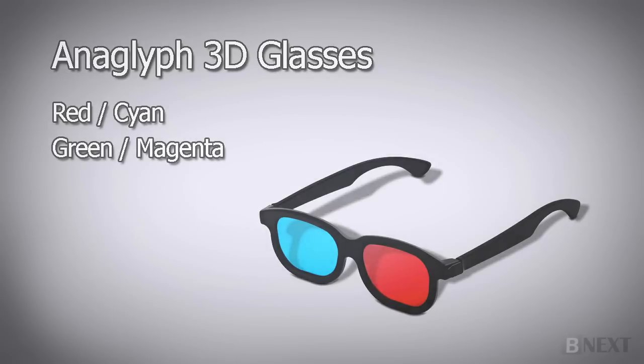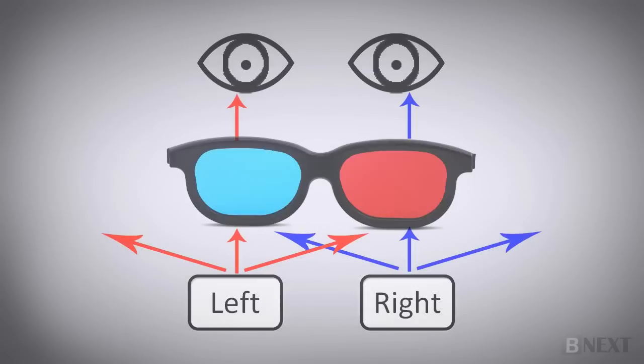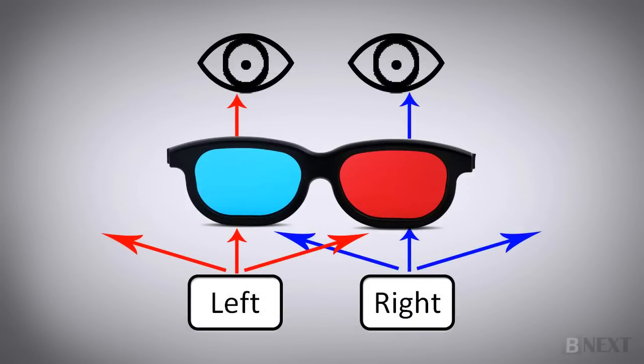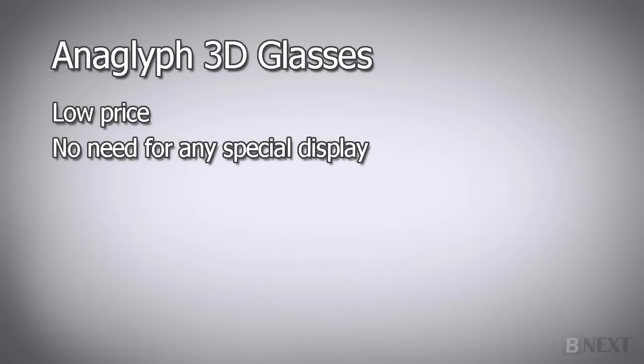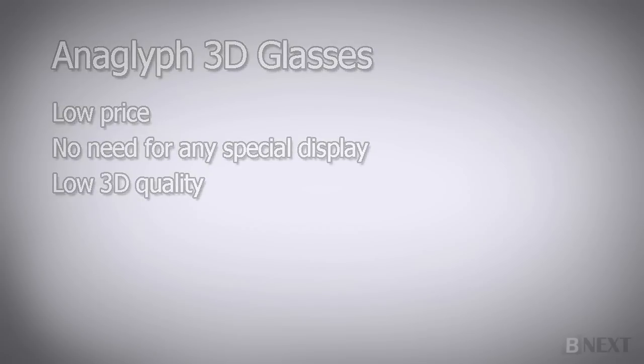The colored lenses of the glasses filter each frame to its designated eye, corresponding to color differences in the 3D movie. The main advantage of Anaglyph 3D glasses is the low price and that there is no need for a special display for watching Anaglyph 3D. You can use any standard display or even print an Anaglyph picture on paper. The disadvantage of Anaglyph 3D glasses is the low 3D quality they offer. This is why they are not currently being used in any of the modern cinemas or with 3D TVs today.